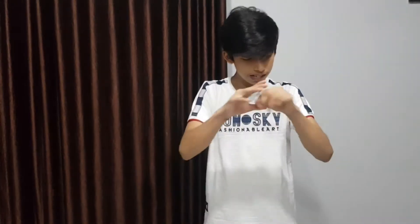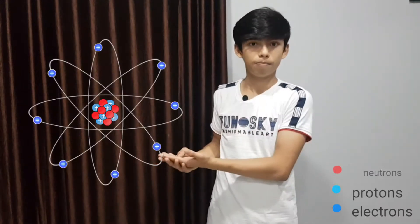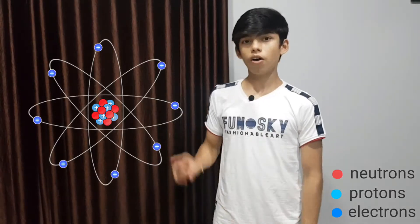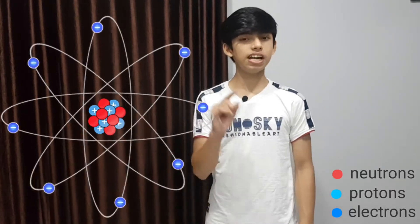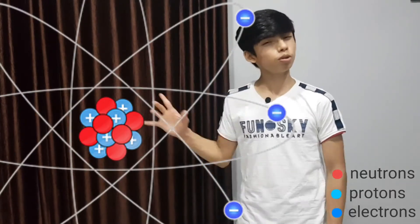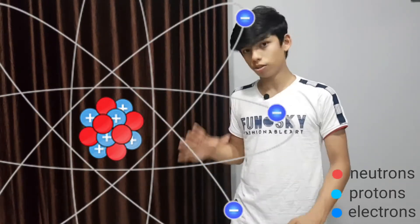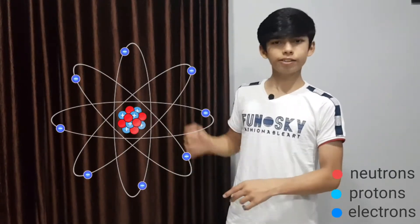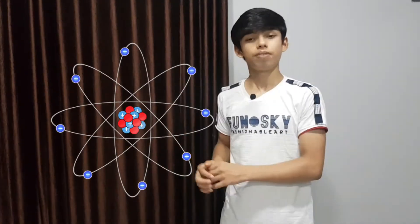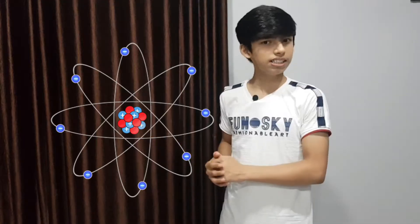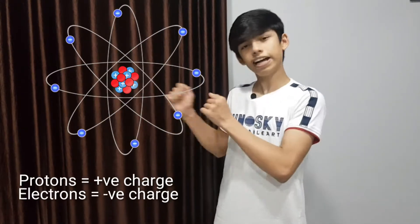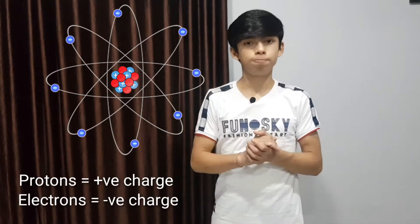Now let's go deep into something so that we get something called an atom. So here we have an atom. Inside the nucleus there are protons and neutrons, and outside the nucleus there are electrons which are revolving around. Here you can see that protons have a positive charge and electrons have a negative charge.